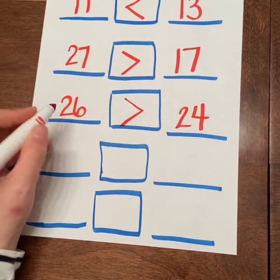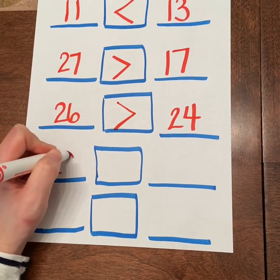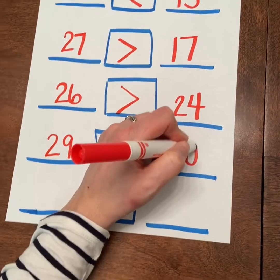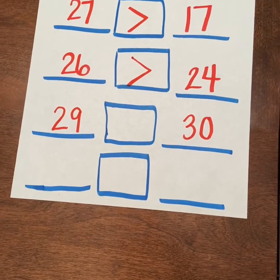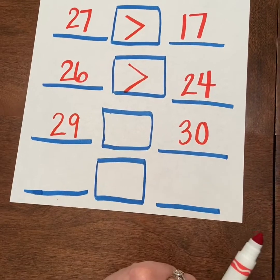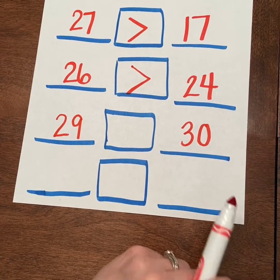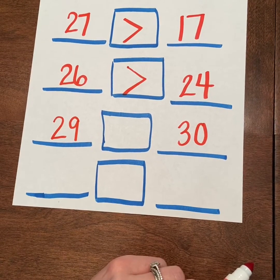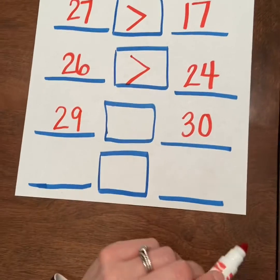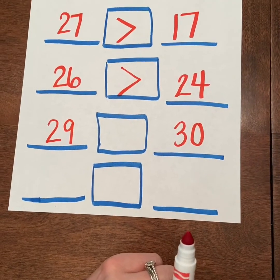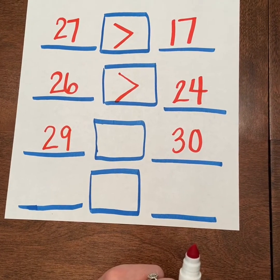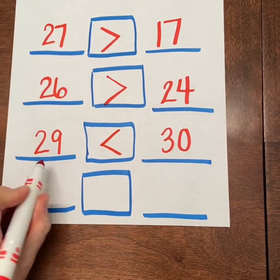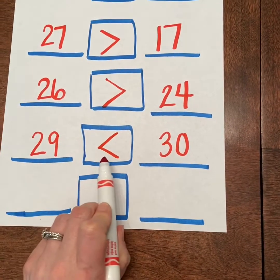Let's write in 29 and 30. Which one is greater? Draw in the alligator's mouth facing the greater number, the bigger number. 30 is greater, so this reads: 29 is less than 30.